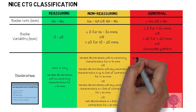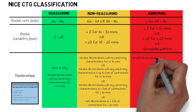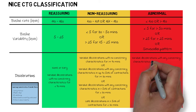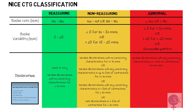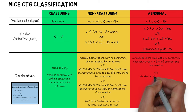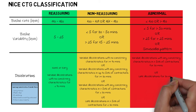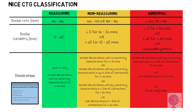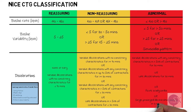The abnormal features include: variable decelerations with any concerning characteristics in more than 50% of contractions for 30 minutes; or late decelerations for 30 minutes; or an acute bradycardia; or a single prolonged deceleration lasting more than or equal to three minutes.